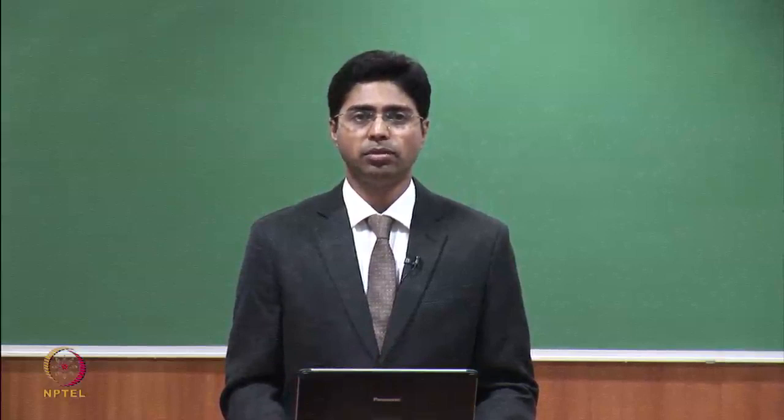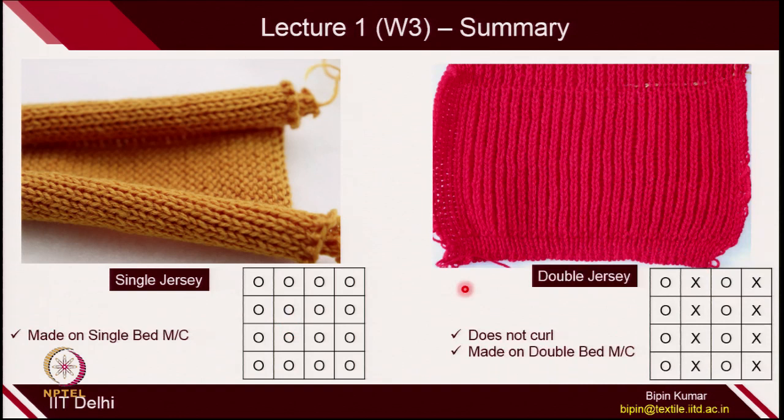We categorized 2 different types of fabric. One was single jersey fabric, which is usually made on single bed machines. In single jersey fabrics, you can either see the technical back loop on one side of the surface, or if you flip that surface, you will see the technical front side. It is very difficult to work with single jersey fabrics because the moment you relax this fabric, it will try to curl from the edges. To overcome this problem, a new kind of fabric was introduced, usually called double jersey fabrics.